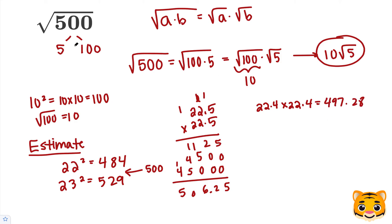This actually is closer to 500. So 22.4 squared gives us something approximately 500. We can say that the square root of 500 is approximately 22.4.